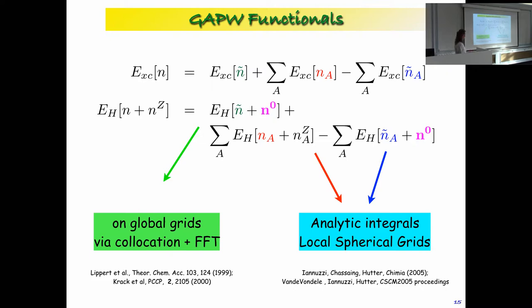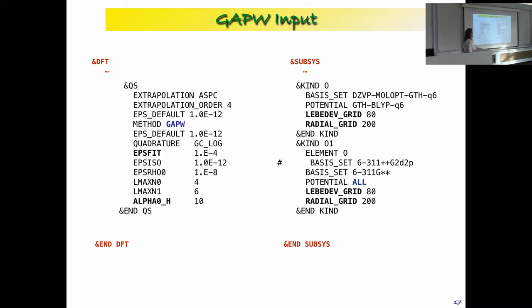For local terms, we use expansions in spherical Gaussians and calculate integrals using spherical grids with a radial part and an angular part. The radial part uses Gauss-Chebyshev quadrature and the angular part uses the Lebedev quadrature. These grid parameters appear in the input, so it's useful to know what these numbers mean.